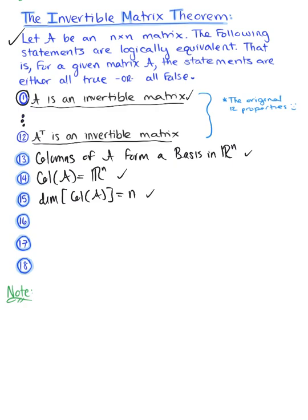And if the column space of matrix A is equal to R^n, since the dimension of the column space is equal to the rank of matrix A, we know that the rank of matrix A is equal to n.